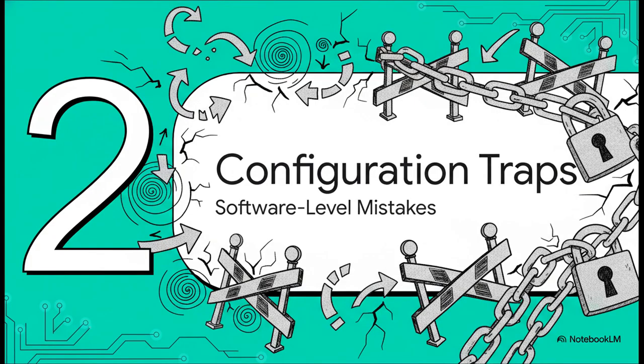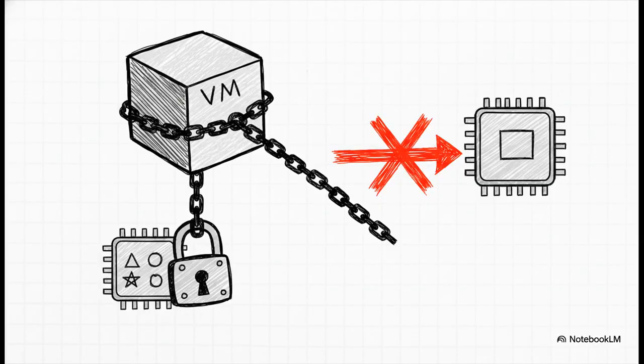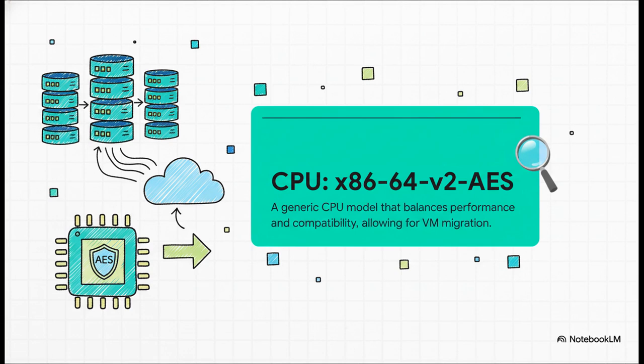Okay, so now that we've got the hardware foundations sorted, let's move on up to the software level settings. These are the kinds of configuration traps that can totally lock you in, prevent you from migrating VMs, and just completely undermine any high availability plans you might have. This one feels so logical when you first see it. When you create a VM, you can set the CPU type to host. The idea is that you're passing through all of your processor's features for maximum performance. But here's the trap. That VM is now permanently locked to that specific CPU. If you ever want to migrate it to another machine, and that new machine doesn't have the exact same processor, you're completely out of luck. The much smarter move is to choose a more generic CPU model, something like x86-64v2 AES. This gives you a fantastic balance of modern features and great performance, but it also preserves that crucial ability to live-migrate your VMs between different physical machines in a cluster.